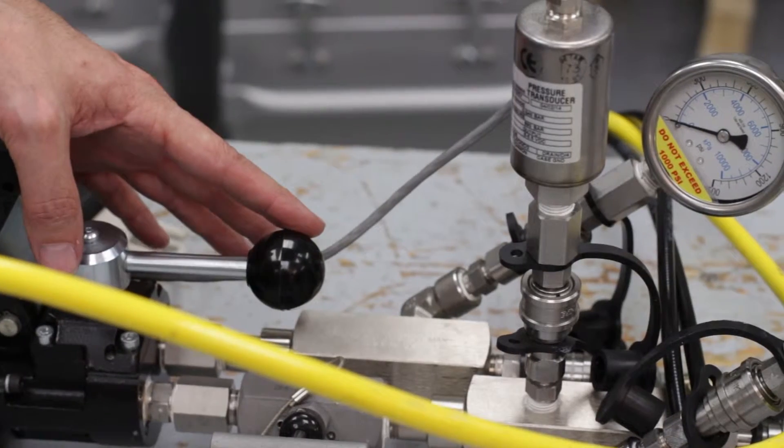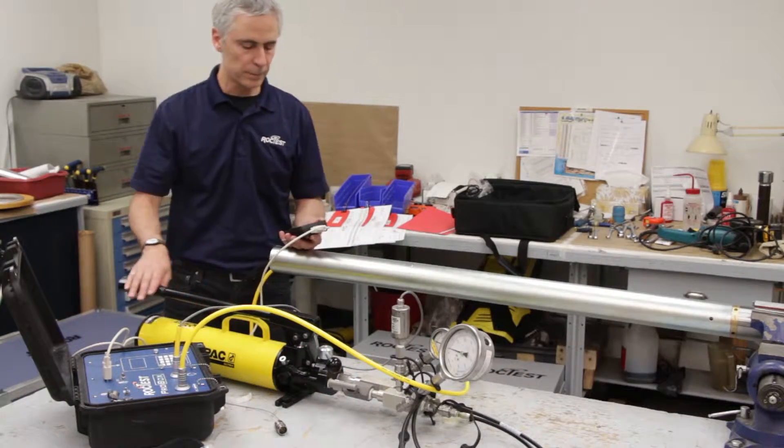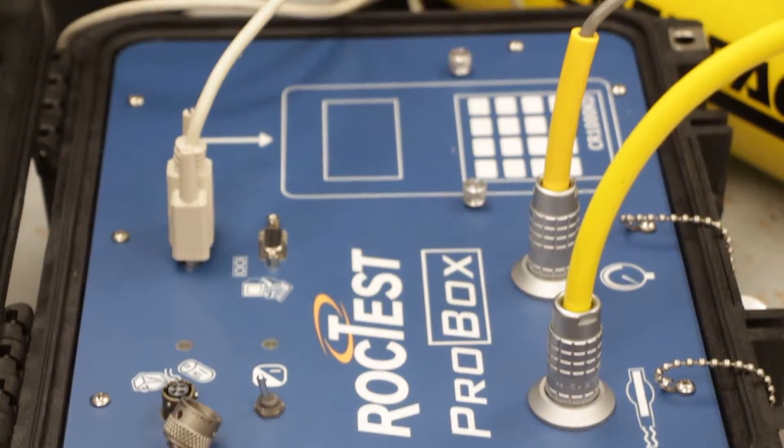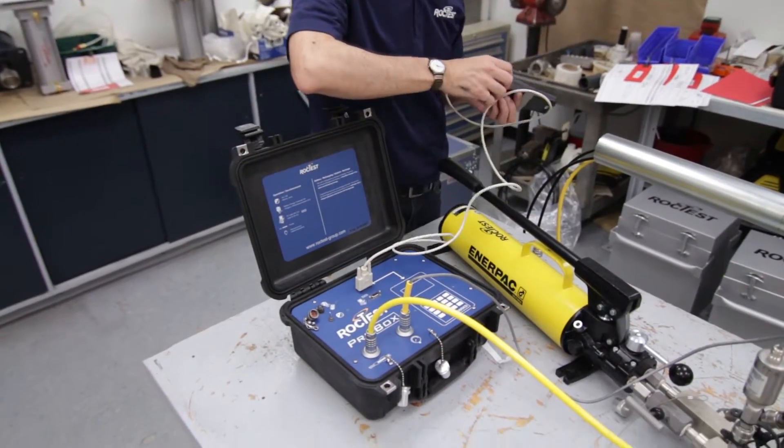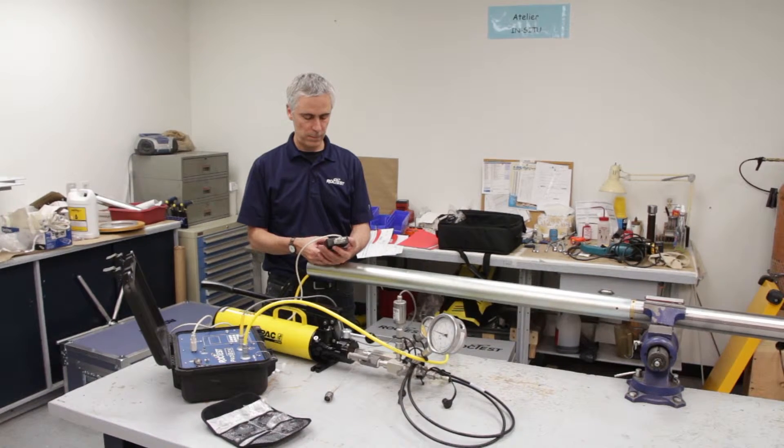Place the pump's small handle on position 1 and activate the pump to displace the piston to the end of its range. Maximum range is reached when the volume displayed on the probe box stabilizes at around 676 cc.